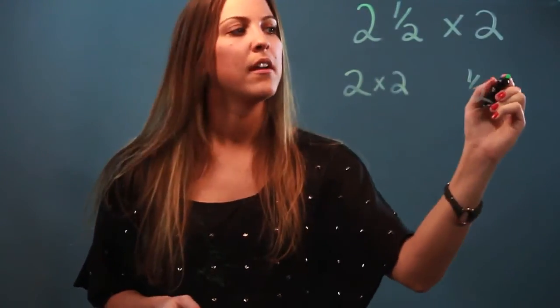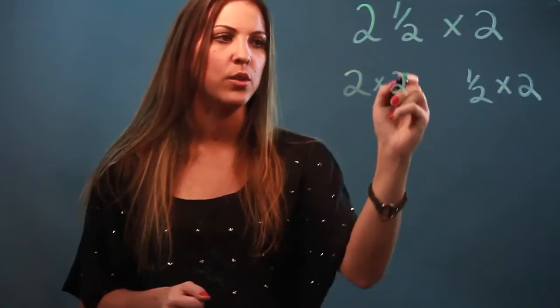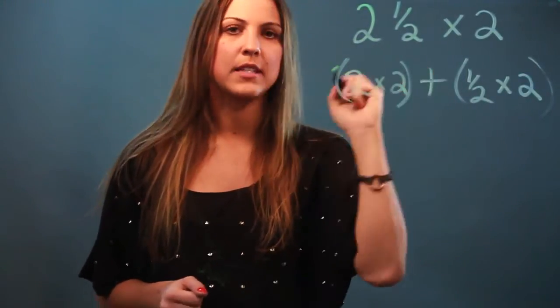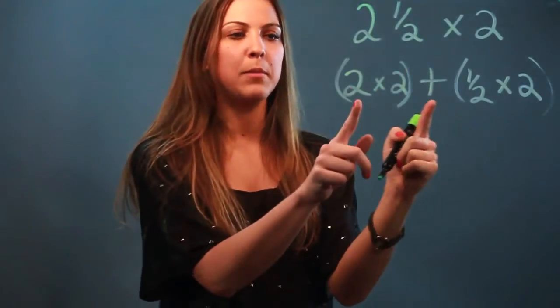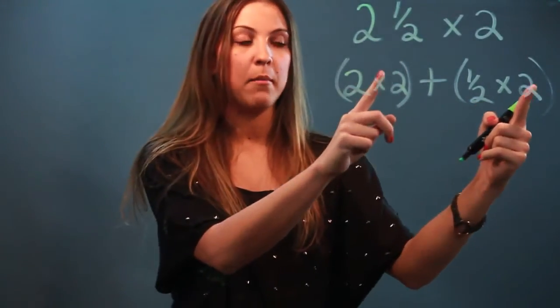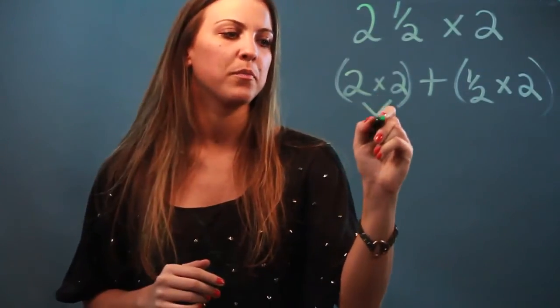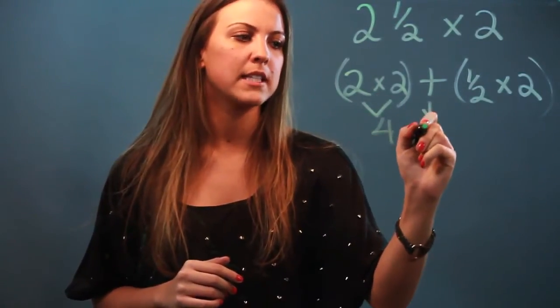And I'm going to multiply each of those parts by the number two. So I'm going to do two times two and I'm going to do one half times two. And I'm going to take the results of both of those and add them together. So two times two is just four. Bring down your plus sign.